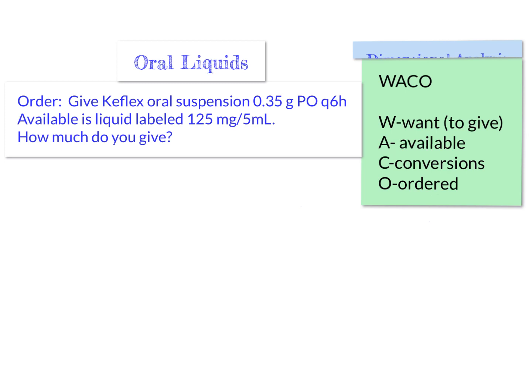Let's look at some more examples of using dimensional analysis. We'll start with oral liquids. The order states to give Keflex oral suspension 0.35 grams PO every 6 hours. Available is a liquid labeled 125 milligrams per 5 mL. How much do you give?